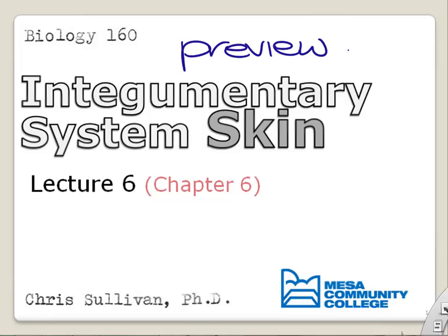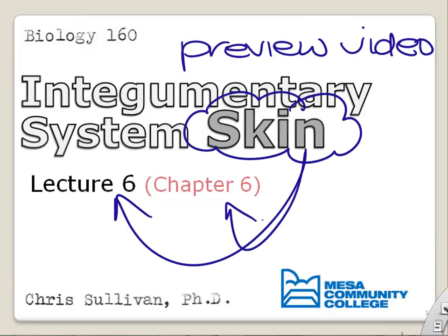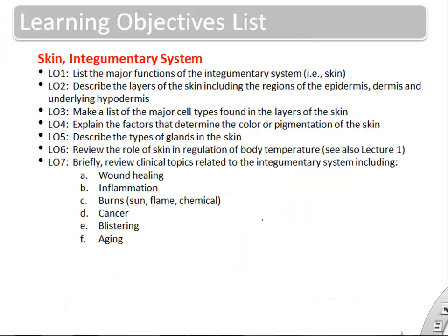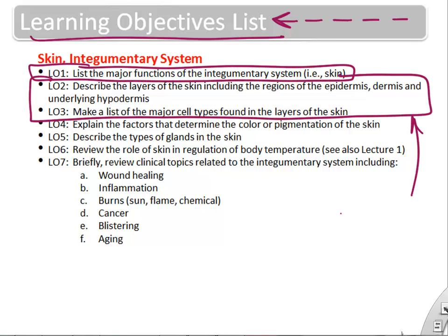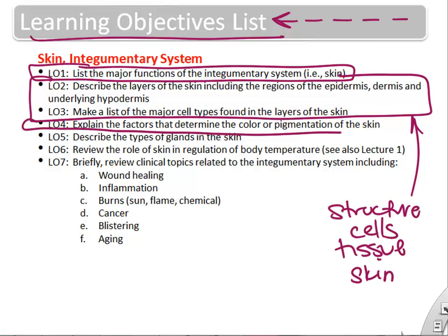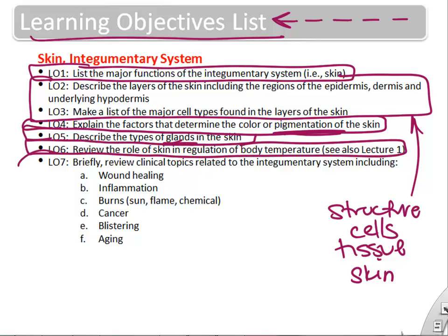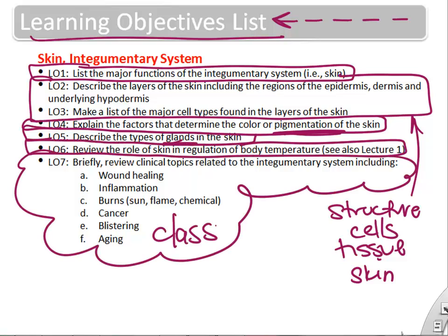This is a preview video for lecture six. We're going to cover the skin, which is also chapter six of your textbook. The learning objectives we'll cover: in this video we'll focus on some of the earlier ones. We'll list the major functions of skin, cover the structure of skin including the tissues and the cells, and we'll build the skin. We'll talk a little bit about pigmentation and glands in the skin. What we'll cover in class will be some of the more specific clinical topics.